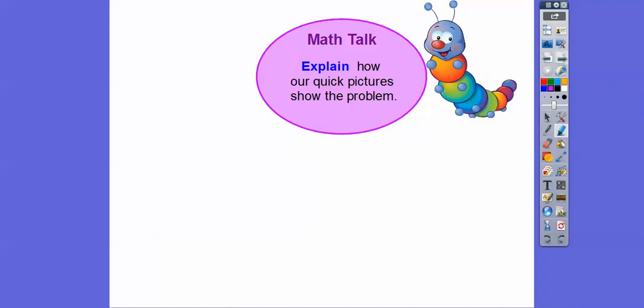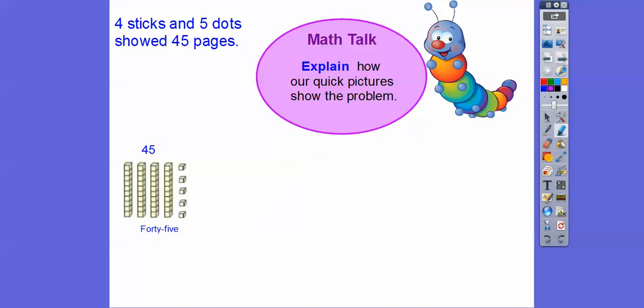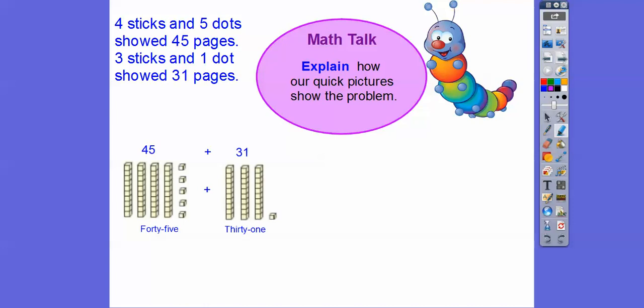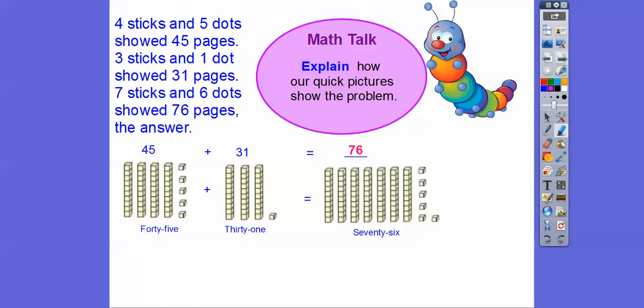Explain how our quick picture shows the problem here. So four sticks and five dots showed us 45 pages. And then three sticks and one dot showed us 31 pages. And then when we added them together, we got seven sticks and six dots, which showed us 76 pages, which was our answer right there.